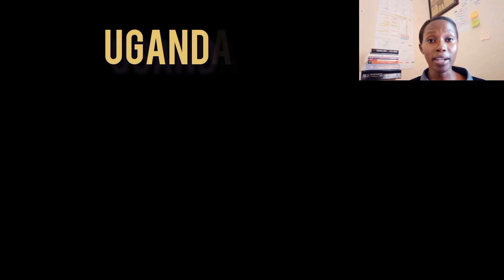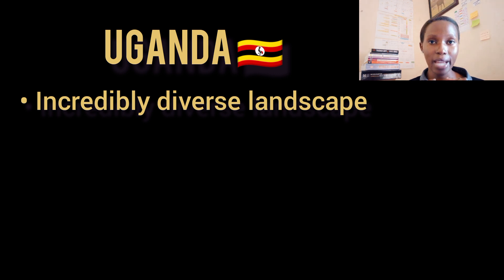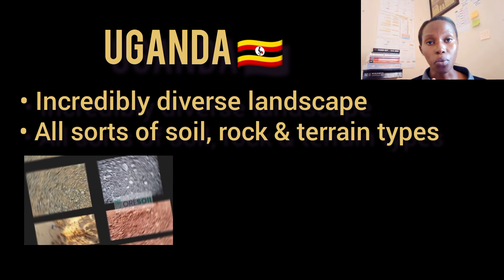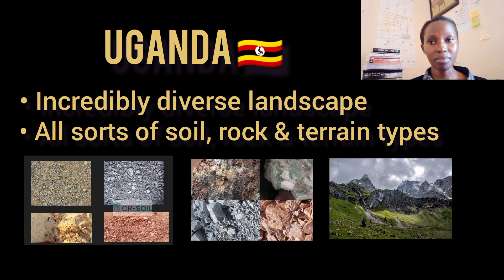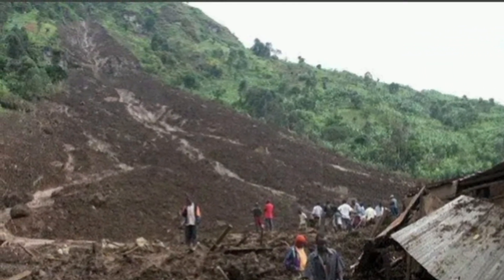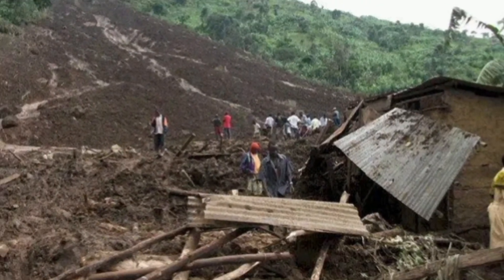But why does this matter so much in Uganda, and why should it matter to you? Uganda has an incredibly diverse landscape — all sorts of soil and rock types — and these affect the way we build things. From the flatlands to the hilly or mountainous regions, the ground here isn't a one-size-fits-all situation.